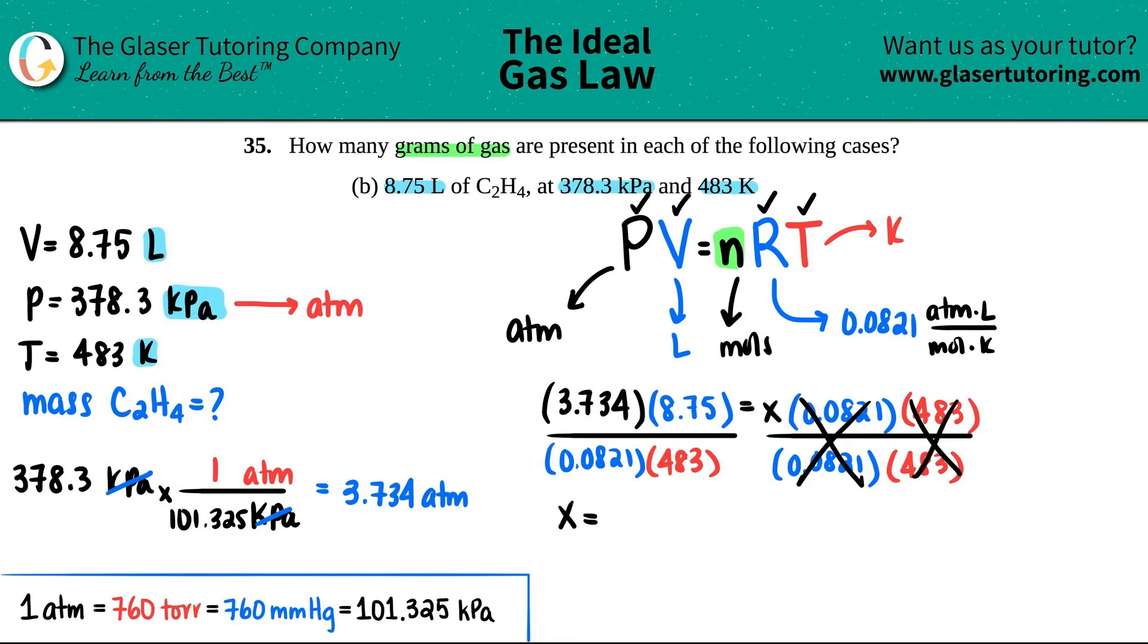Let's see, 3.734 times 8.75 divided by 0.0821 and then divide again by 483. So I get 0.824. Remember this was moles, so this is now moles of the compound, and the compound was C2H4. But now we still wanted the mass, but that's okay because remember we know how to go from moles of something to the mass of something. That's just dimensional analysis.